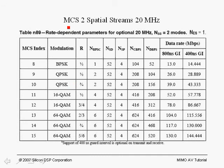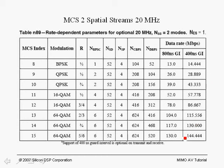Here's an example of modulation coding schemes for two spatial streams at 20 MHz. We have the MCS index, the modulation that is used, the rate, and the various parameters. Of interest is the fact that we can go from a high rate of 130 Mbps all the way down to 13 Mbps. Notice there's an option to use an 800 nanosecond guard interval just as in 802.11a, or an express mode using half the size of the guard interval, giving us less overhead and increased throughput.